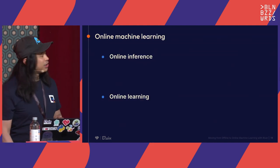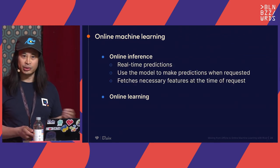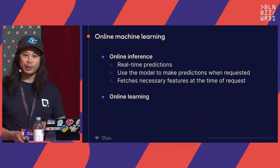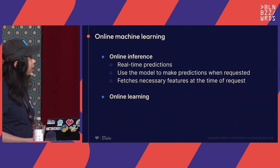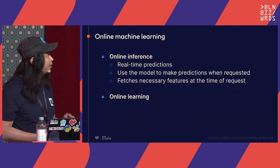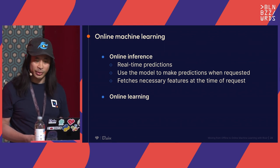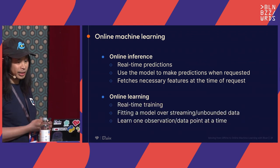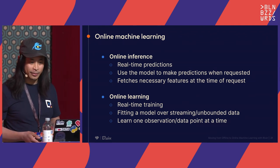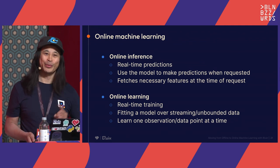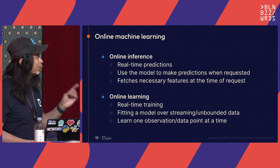For online machine learning, we'll break it into two sections. Online inference, also known as real-time predictions, is when you use the model to make predictions on demand. You need to make that really quickly, so you fetch the necessary features at the time of the request using feature stores like Hopsworks. For online learning, also known as real-time training, you're fitting a model over streaming or unbounded data. The most important concept to walk away with is that you are learning one observation or data point at a time.